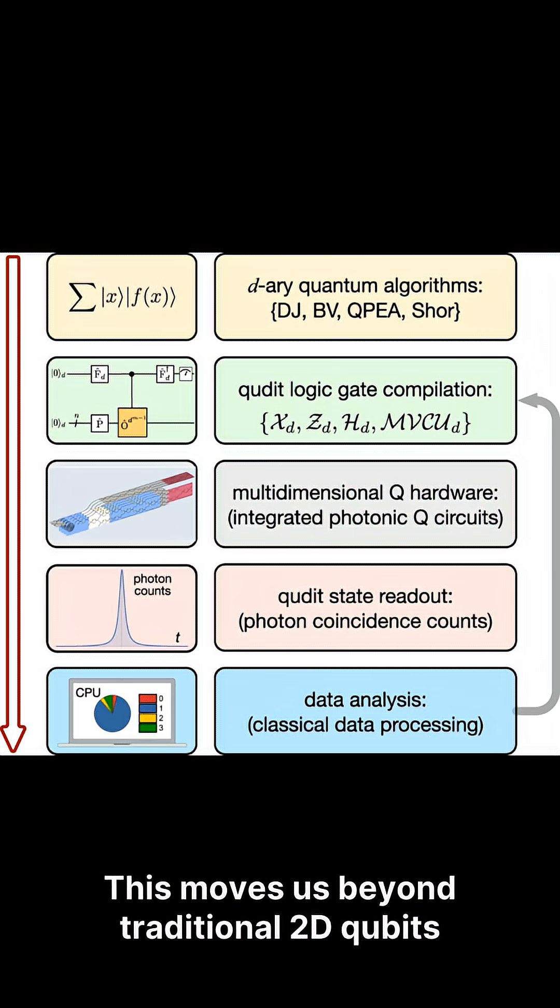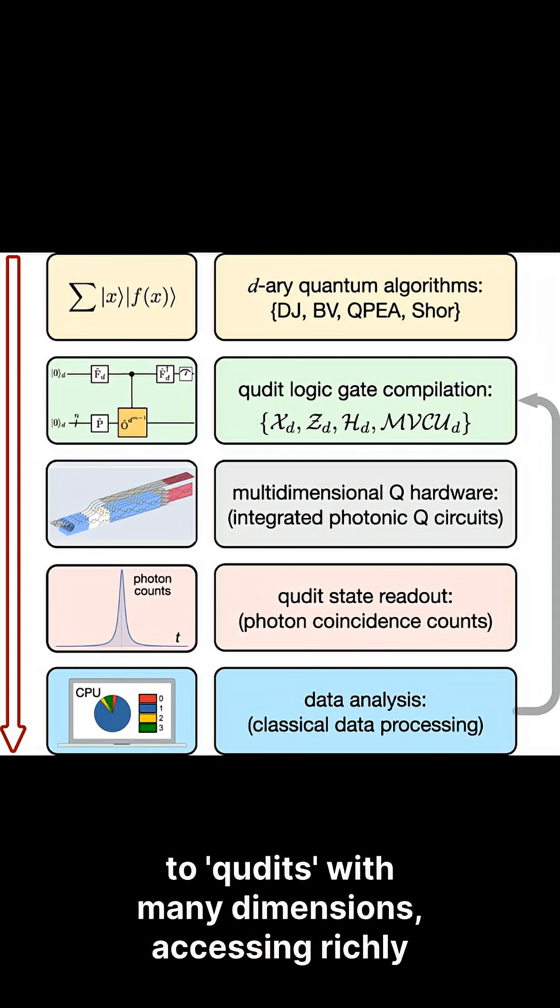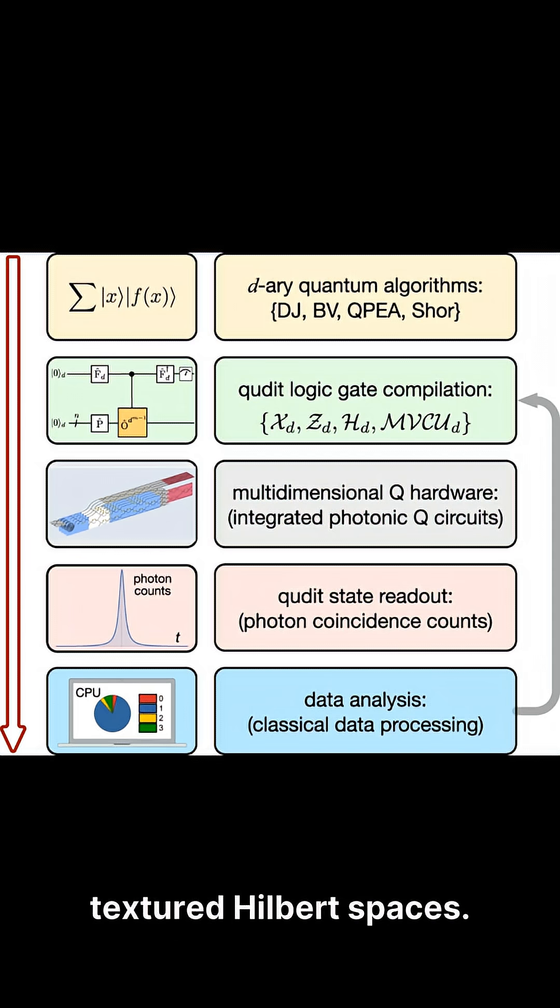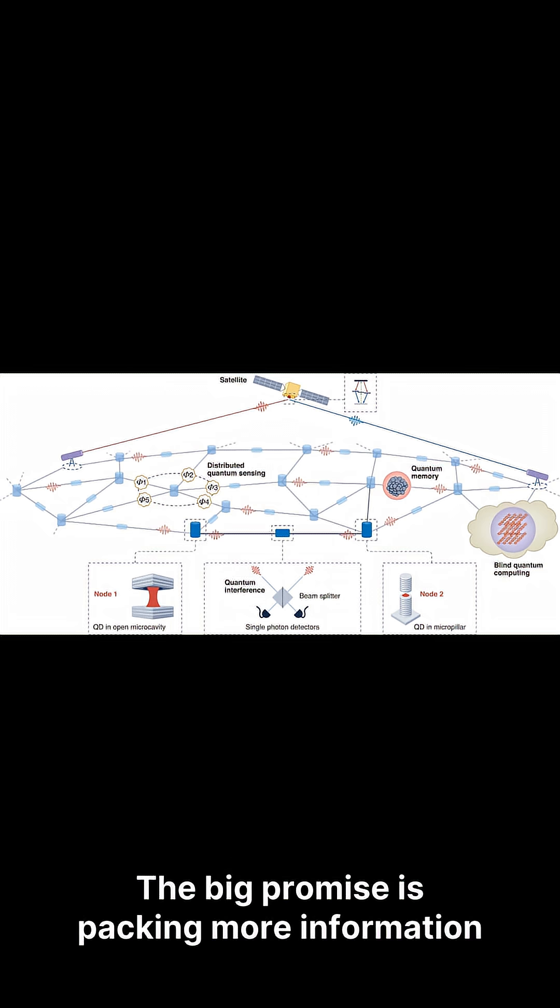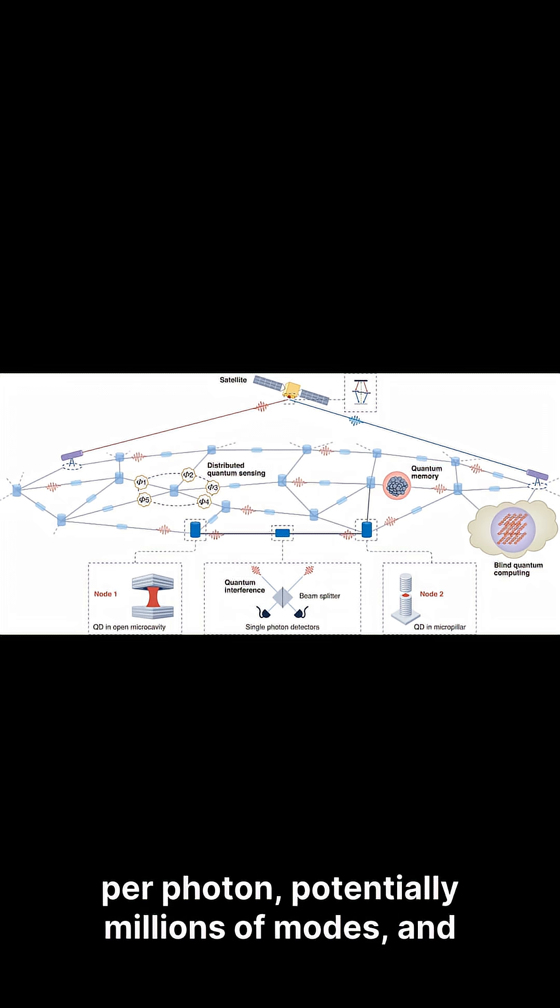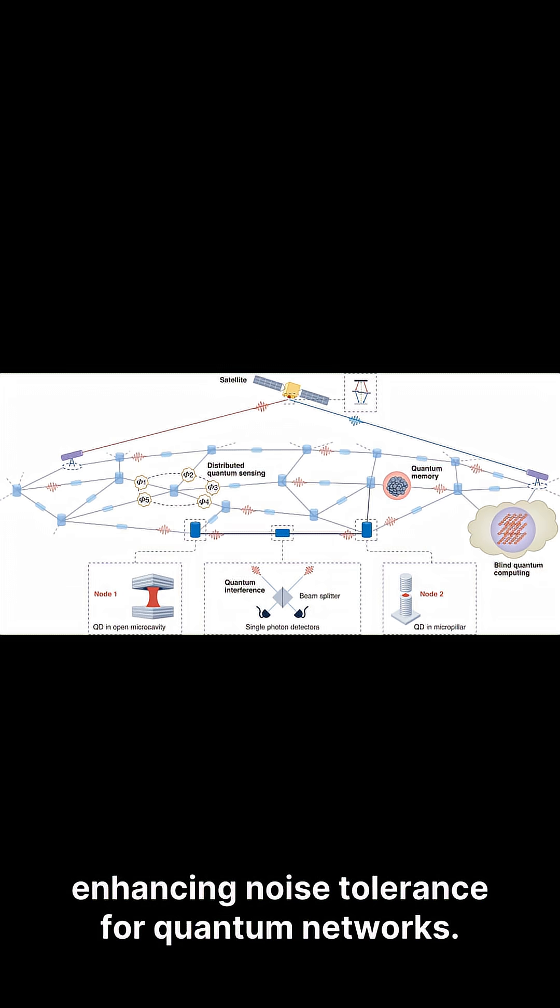This moves us beyond traditional 2D qubits to qudits with many dimensions, accessing richly textured Hilbert spaces. The big promise is packing more information per photon, potentially millions of modes, and enhancing noise tolerance for quantum networks.